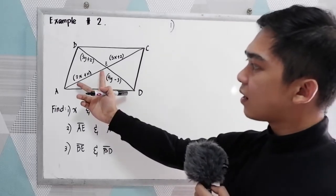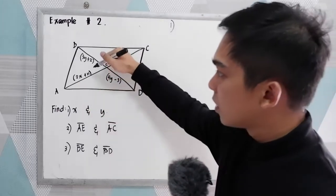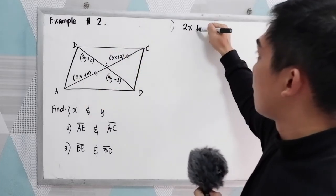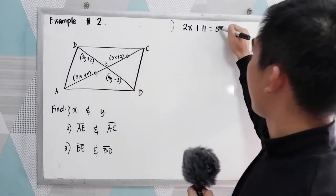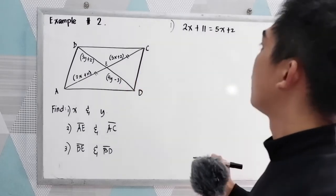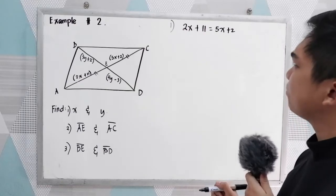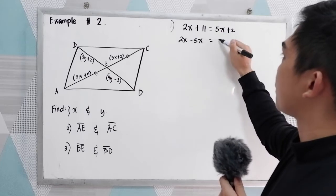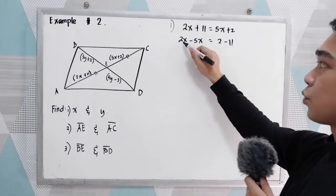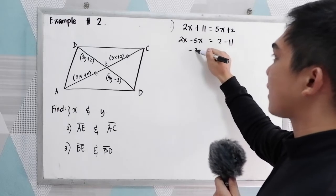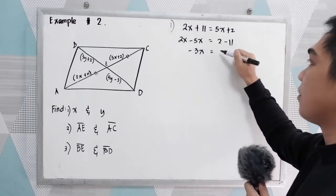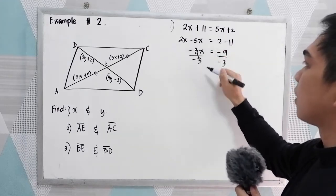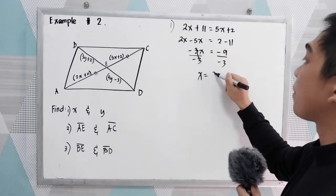We know that diagonals bisect each other. So 2x plus 11, that is equal to 5x plus 2. Solve for x. So we have 2x minus 5x is equal to 2 minus 11. So 2x minus 5x, that is negative 3x is equal to 2 minus 11, negative 9. Now divide by negative 3. Our x is positive 3.